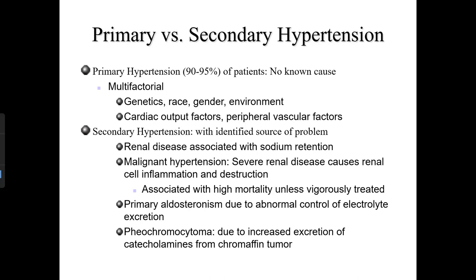In primary hypertension, which accounts for 90 to 95% of patients, there is no known cause — it is multifactorial, involving genetics, race, gender, environmental factors, cardiac output, and peripheral vascular factors. Secondary hypertension has an identified source: renal disease associated with sodium retention, malignant hypertension, primary aldosteronism due to abnormal control of electrolyte excretion, and pheochromocytoma due to increased excretion of catecholamines from a chromaffin tumor.